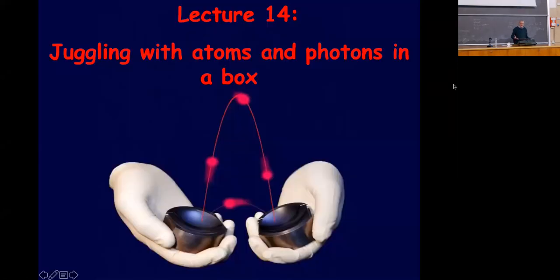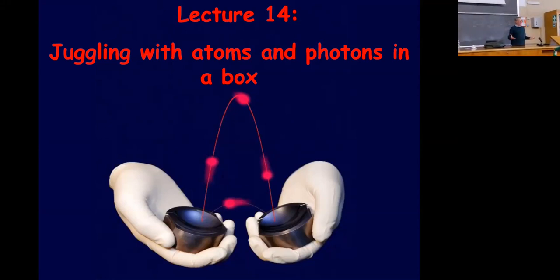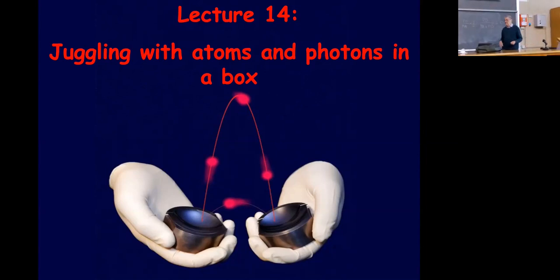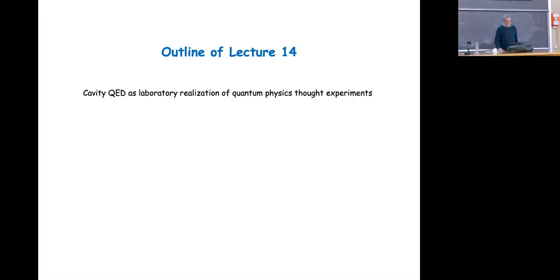I can define this experiment by saying that what we are studying is how we can juggle with atoms and photons in a box. You see here this kind of artistic picture made by one of my colleagues — he holds these mirrors, these are niobium mirrors on which the photons can bounce many many times. So we juggle with atoms and photons in this surrounding. The outline of the lecture will be as follows: I will start by connecting these experiments to the thought experiments I described at the beginning of the lectures.